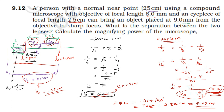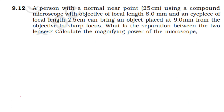The distance between the two lenses is 9.47 cm. That is the answer for the separation between the lenses. Now moving on to the next part: calculate the magnifying power of the compound microscope.